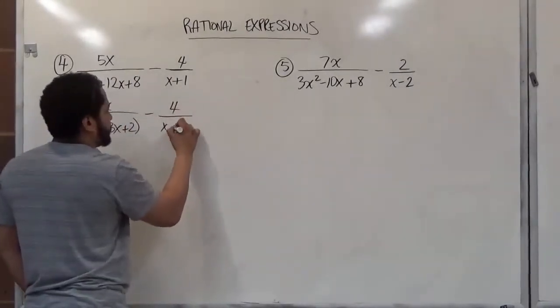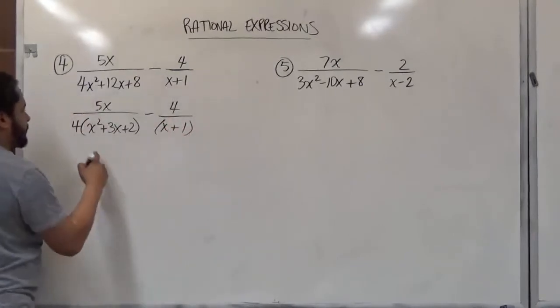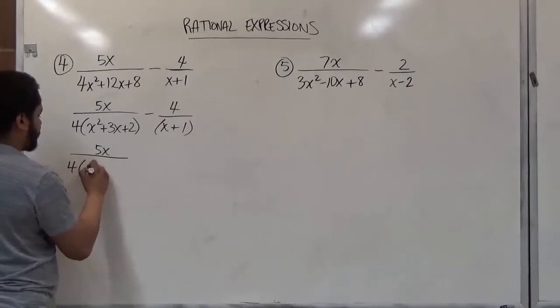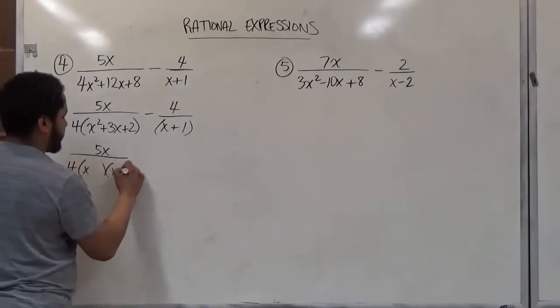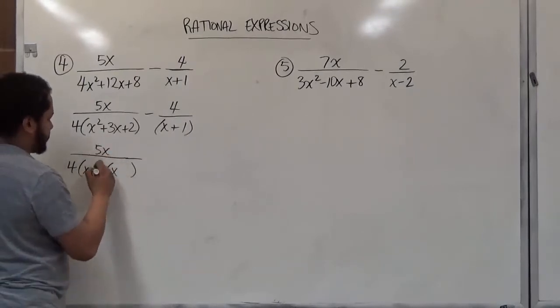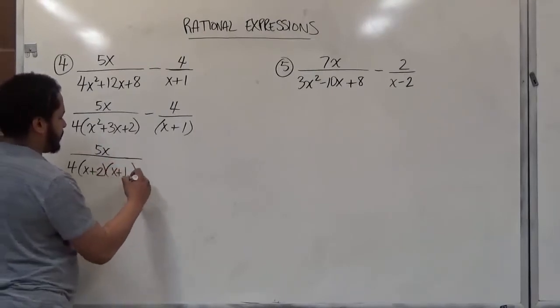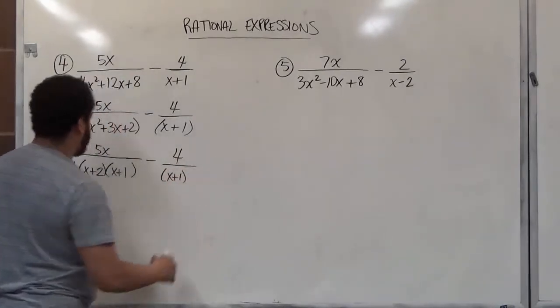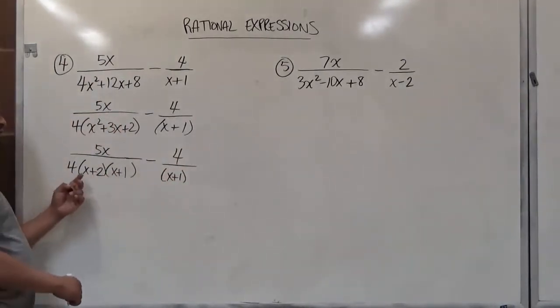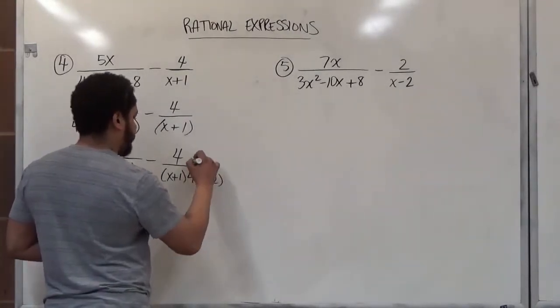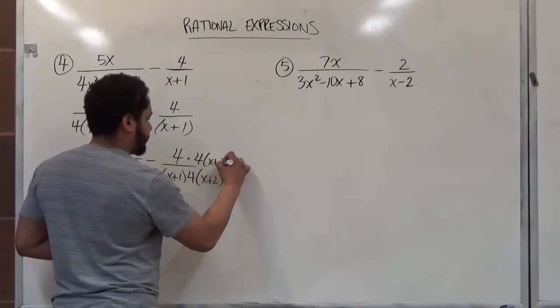And here we have 4 over x plus 1. We continue factoring, so we have 5x on top, we have a 4, we put an x inside one, an x inside the other. Since it ends with a plus, both terms get a plus because the middle term is positive, and the factors of 2 that add up to 3 are just 2 and 1. Here we see the x plus 1 which is under the 4, and all we need to complete the LCD is a 4 and x plus 2. So we're going to multiply by 4 and x plus 2.